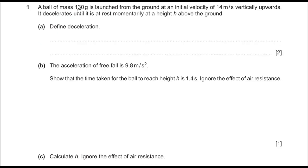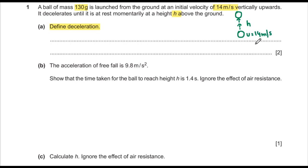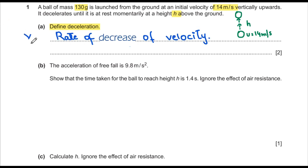First question: a ball of mass 130 grams is launched from the ground at an initial velocity of 14 meters per second vertically upward. It decelerates until it is at rest momentarily at height h above the ground. Define deceleration. It is the rate of decrease of velocity. Whenever velocity decreases, we say the body is decelerating.